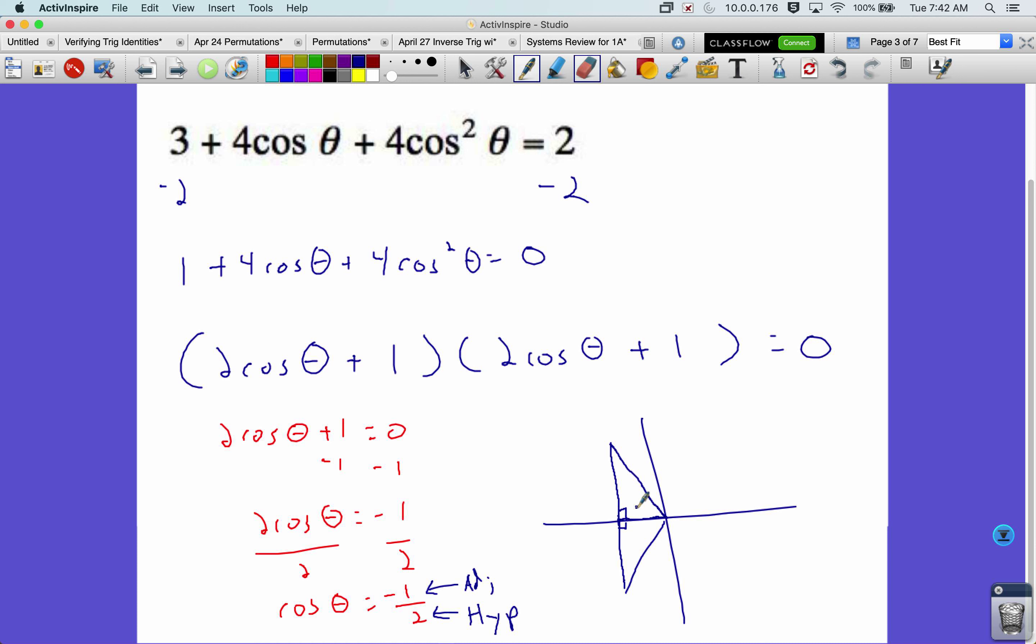All right, so the adjacent there is negative one. The hypotenuse is two. This looks like our one, two, and the square root of three triangle. So I'll label the side, square root of three. This over here is negative square root of three because it's coming down.